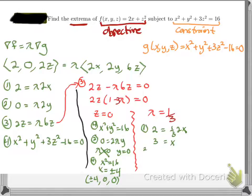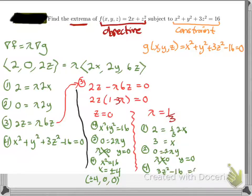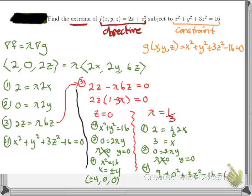Then I use equation 2. Again, you get λ = 0 or y = 0, and since λ can't be zero, y = 0. Now using equation 4 with x = 3 and y = 0: 9 + 0 + 3z² − 16 = 0, so 3z² = 7, giving z = ±√(7/3).